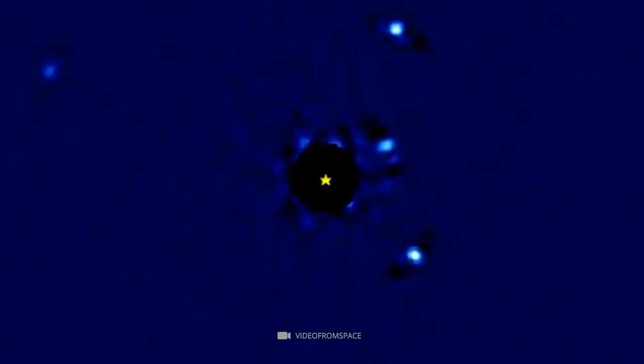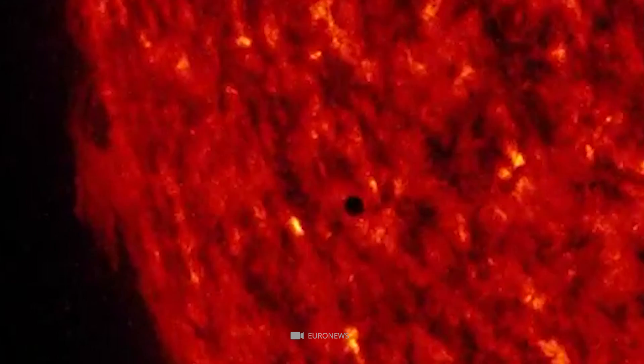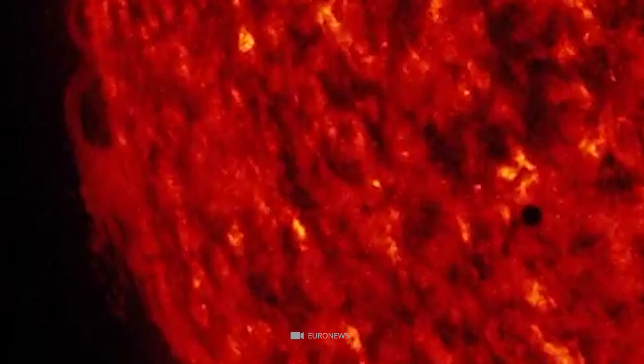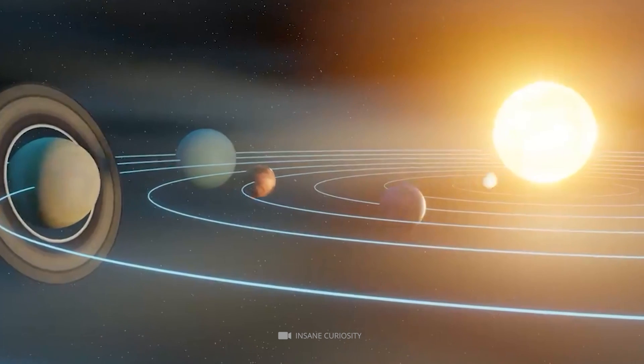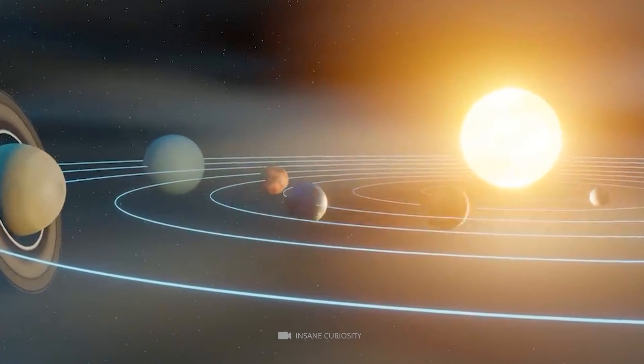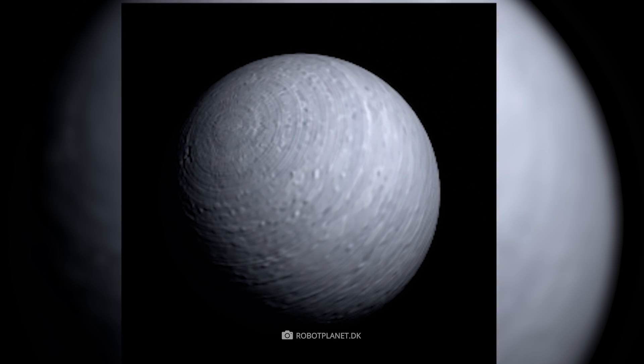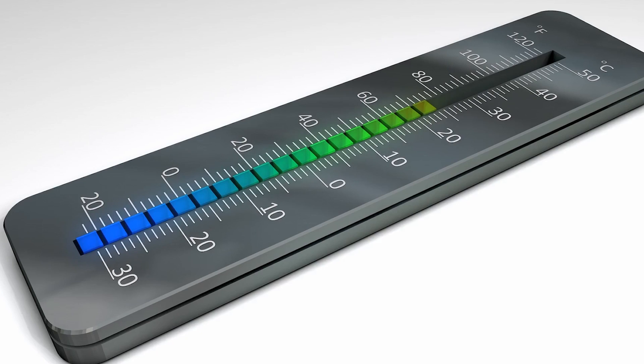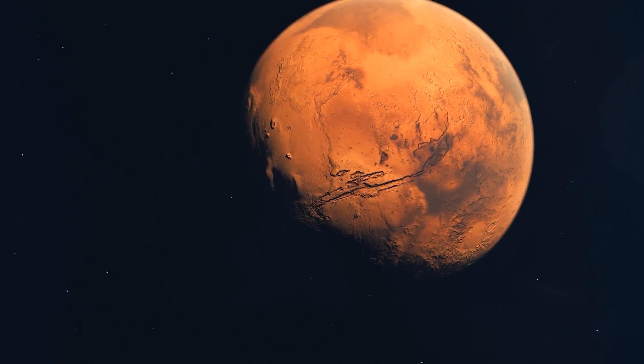Since HAT-P-33b orbits its host star at a distance of only 0.05 AU, significantly closer than Mercury's orbit around our Sun, it makes a full orbit every 4.47 days, making it one of the shortest known orbital periods. Due to this short period, the surface temperature on HAT-P-33b reaches over 2,000 degrees Kelvin, compared to minus 170 degrees Celsius on Mars.